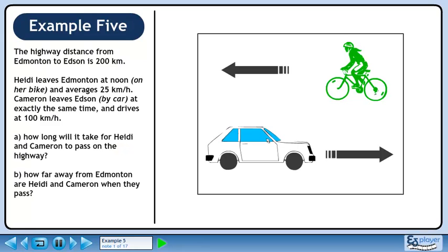The highway distance from Edmonton to Edson is 200 kilometers. Heidi leaves Edmonton at noon on her bike and averages 25 kilometers an hour. Cameron leaves Edson by car at exactly the same time and drives at 100 kilometers per hour.